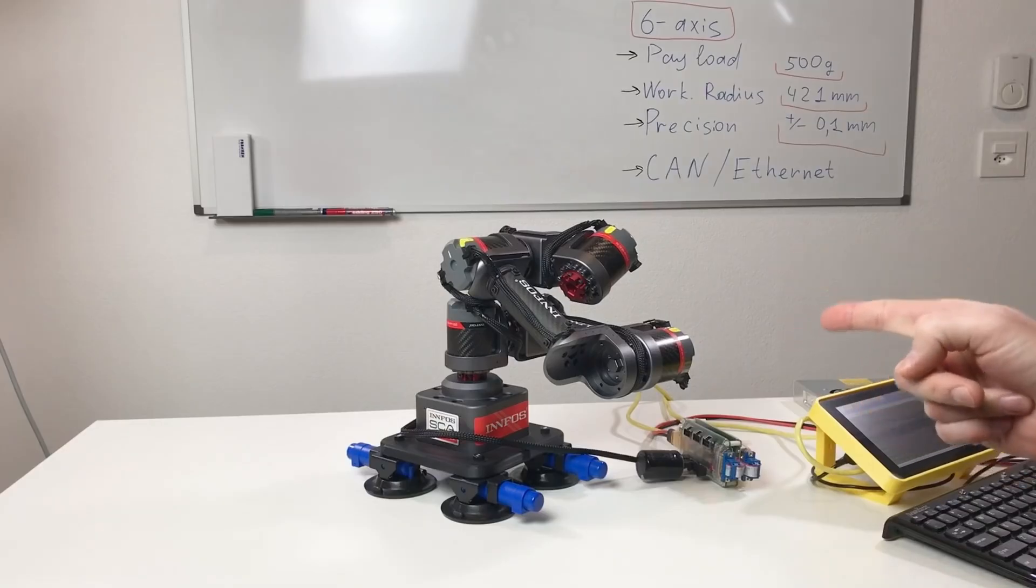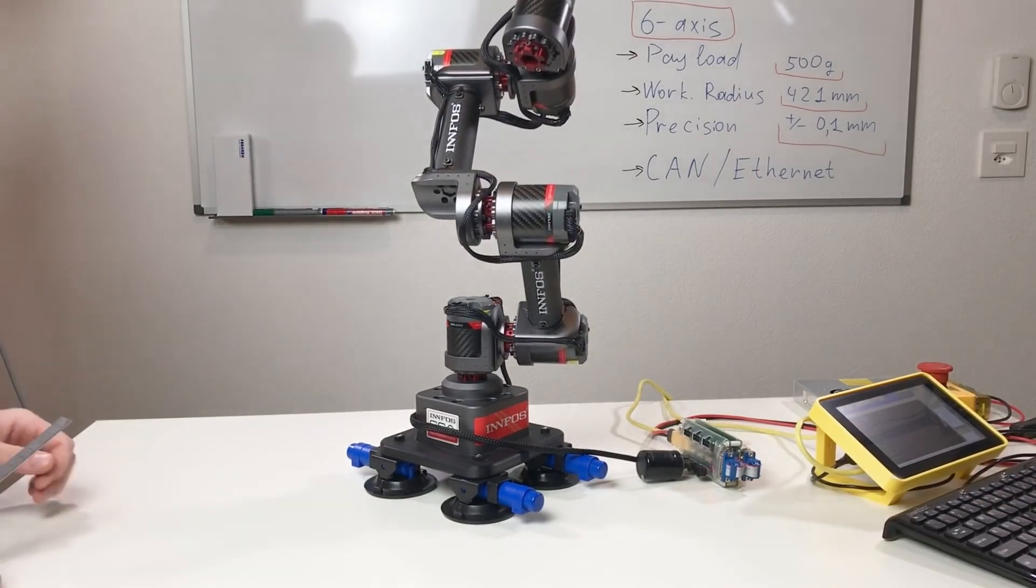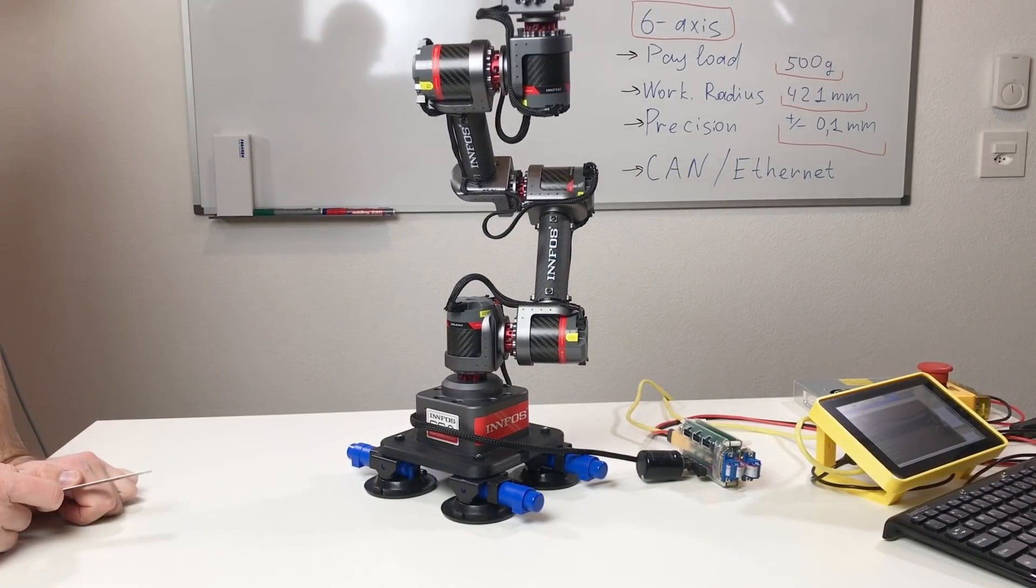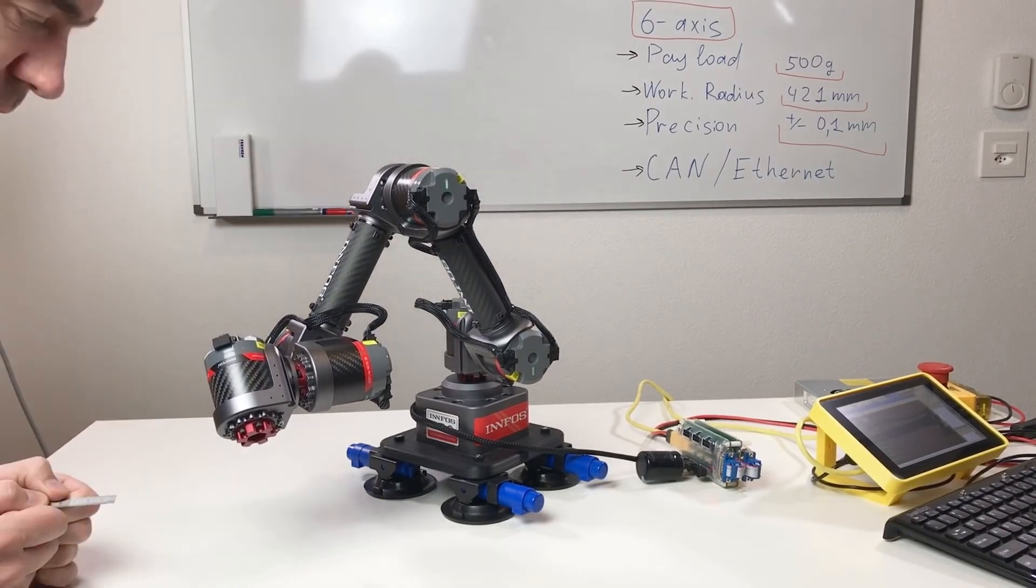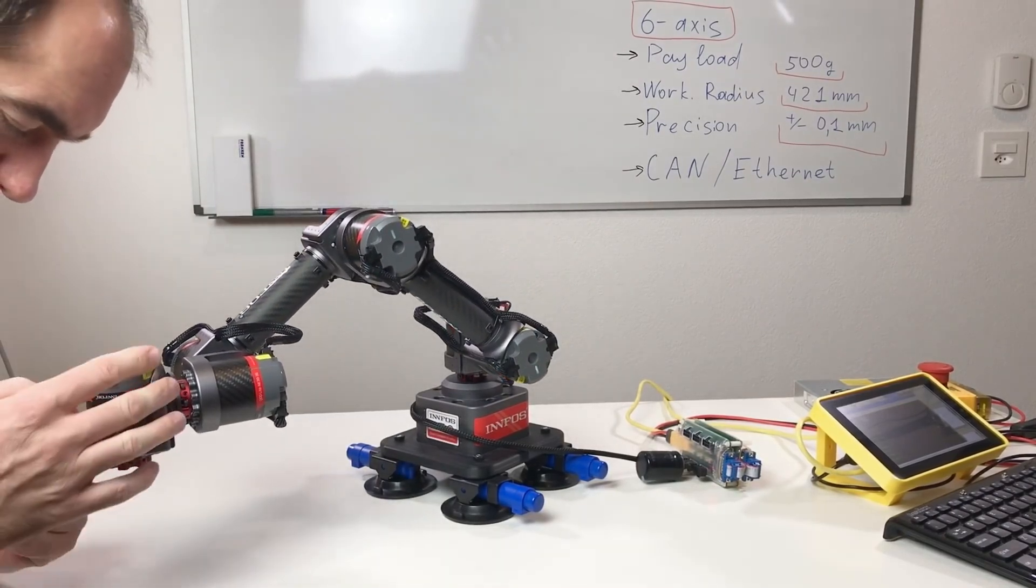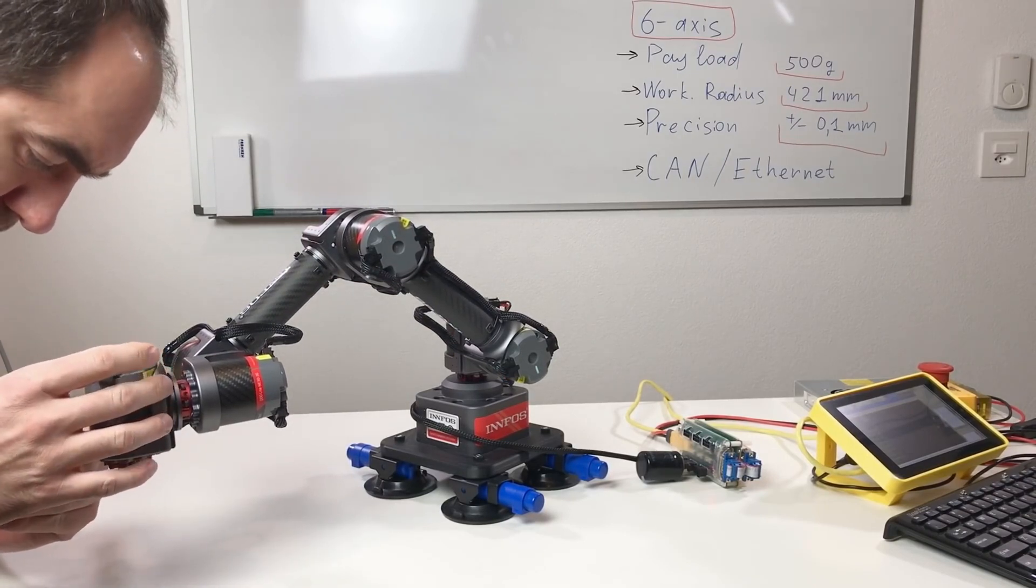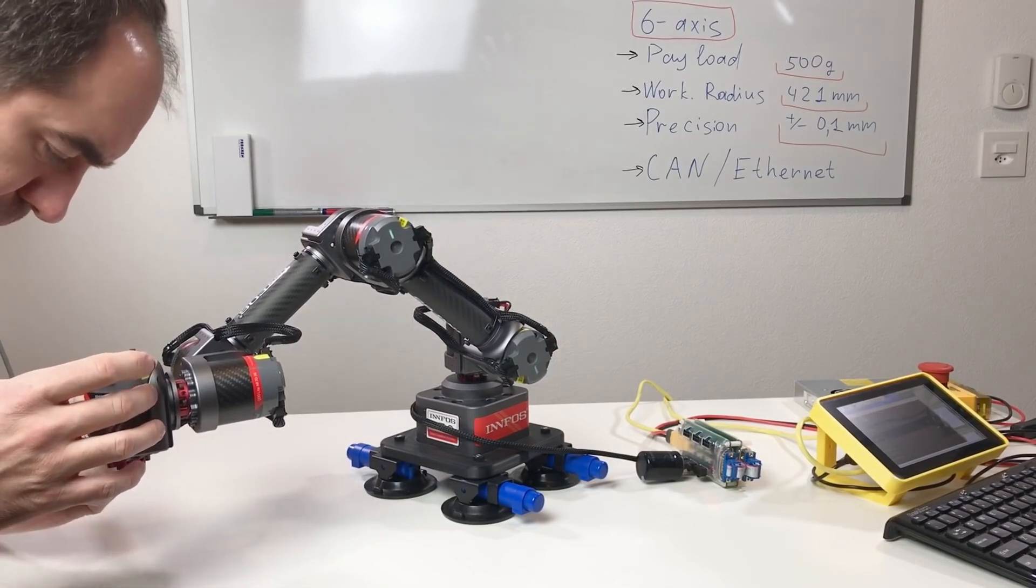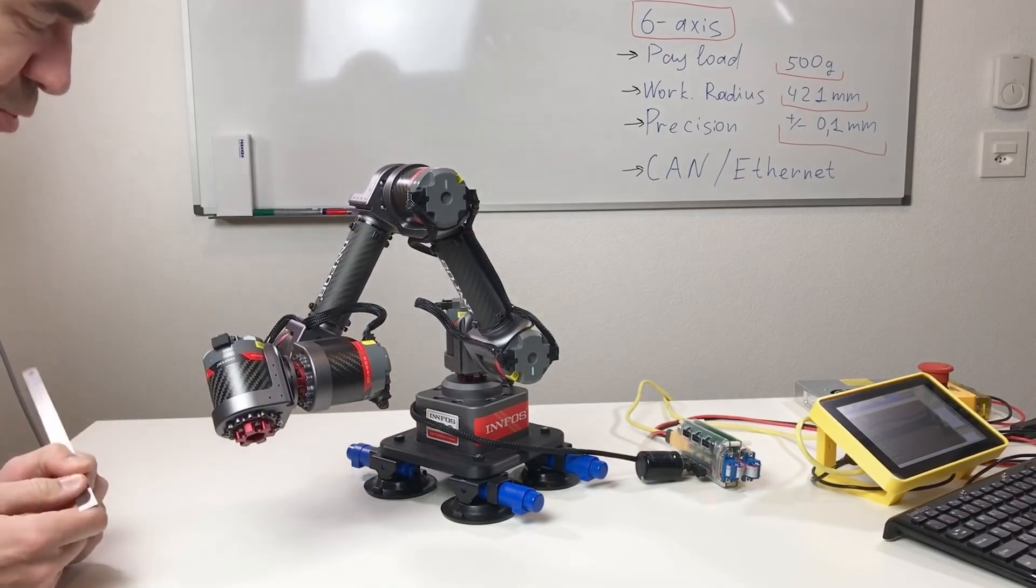Now let's check the backlash at the end effector. I'm not going to measure it precisely, I'm just gonna estimate it. Nice! It still looks nice. Somewhere here.